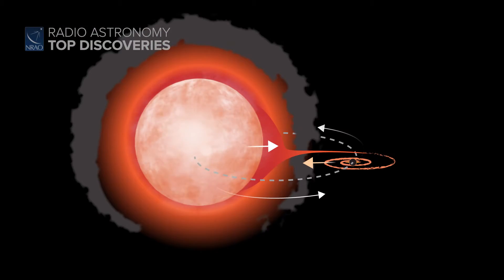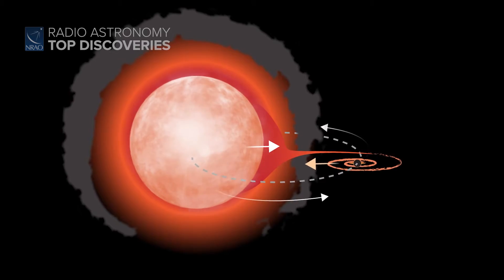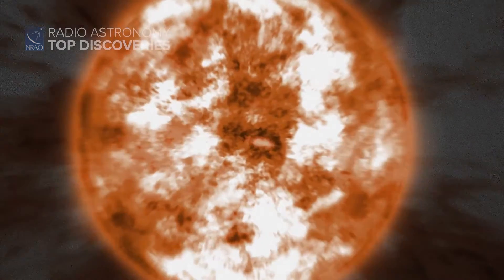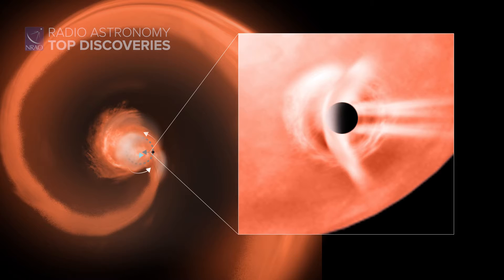Imagine a massive star orbiting a black hole. When the star reaches the end of its life, it swells up into a red supergiant and actually engulfs that tiny but mighty black hole.